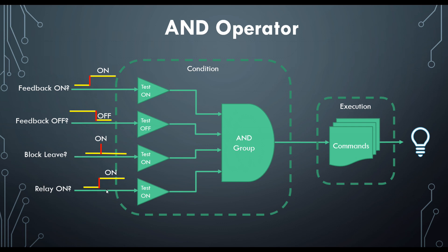Dual because it can be used as a trigger using its event, or as a state. But there are three condition elements that cannot have their state interrogated, because the pulse that element produces is so brief that iTrain does not have enough time to test the state. Block leave is one such element — only its event can be detected. We will call these trigger-only elements, because all they can do is provide the trigger for the timing of the tests.